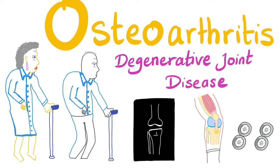We have primary and secondary osteoarthritis. Primary, by and large, is a disease of the elderly. It's a biomechanical problem — wear and tear, plus other factors. With that being said, let's get started.